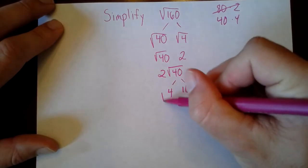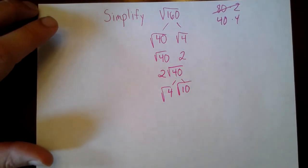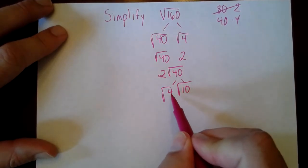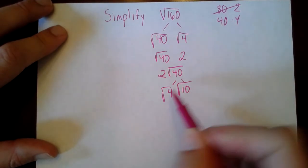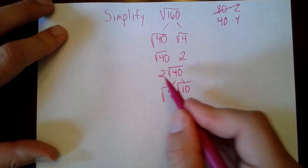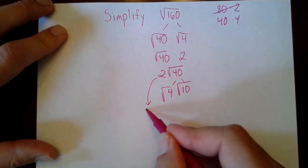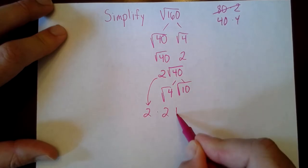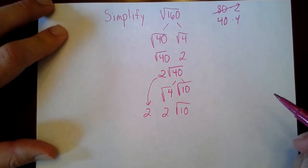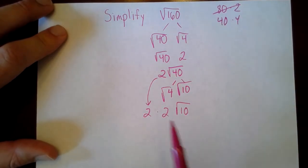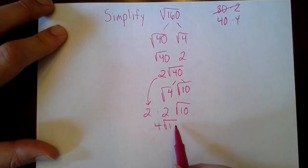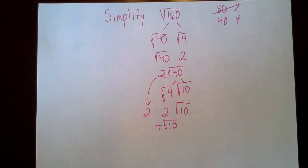4 times 10 gives me 40, so I've got to break it down again — there's more that can be simplified. Root 4 is 2. I already had a 2 from before, and now I have another 2 from this root 4, along with root 10. Since I have two 2s out in front multiplying together, this gives me 4 root 10.